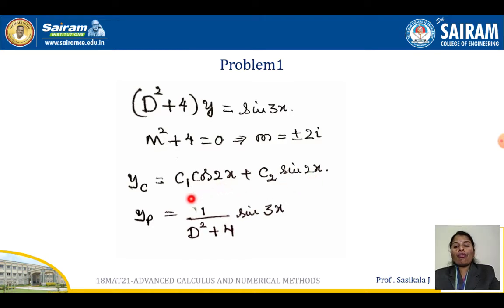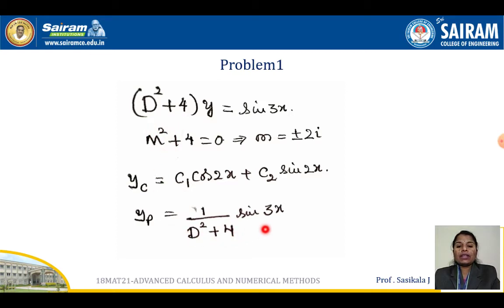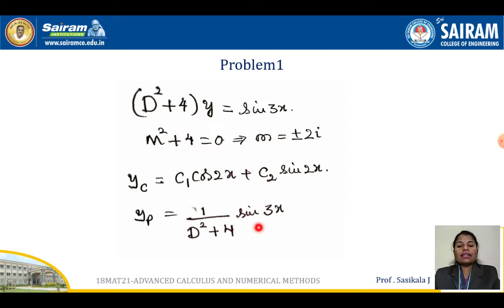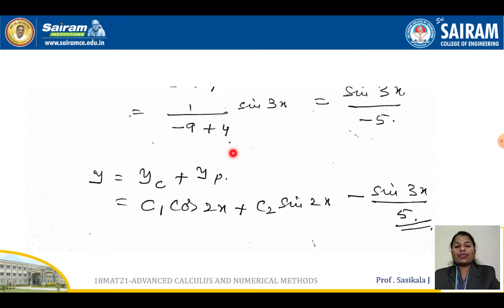Now go for the particular integral. PI = 1/(d² + 4) · sin 3x. Here a = 3, since the general format is sin ax. Replace d² with −a² = −3² = −9. So the denominator becomes −9 + 4 = −5. Therefore PI = sin 3x / (−5), which gives −sin 3x / 5. This is your particular integral.